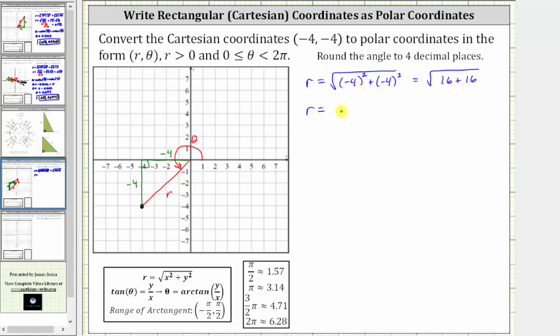r is equal to the square root of 32, which we'll simplify because 32 does contain the perfect square factor of 16. 32 is equal to 16 times two.